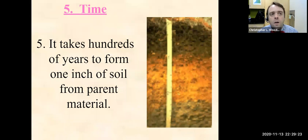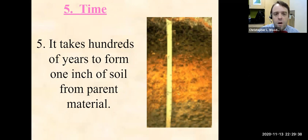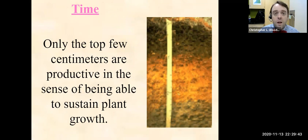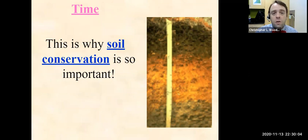Time. Soil is almost a non-renewable resource because it takes hundreds of years just to form one inch of soil from parent material. If we lose that topsoil by over-farming, by tilling, and then weathering and erosion move that soil away, it's irreplaceable — at least in the short term. Only the top few centimeters of soil are actually productive and able to sustain growth. Once that's gone, hundreds of years to form. This is why soil conservation is so important.